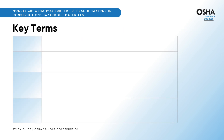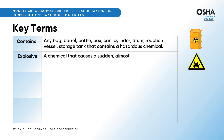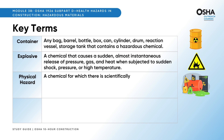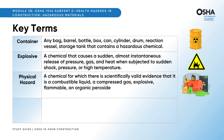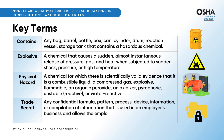Let's memorize essential key terms. Container: any bag, barrel, bottle, box, can, cylinder, drum, reaction vessel, or storage tank that contains a hazardous chemical. Explosive: a chemical that causes a sudden, almost instantaneous release of pressure, gas, and heat when subjected to sudden shock, pressure, or high temperature. Physical hazard: a chemical for which there is scientifically valid evidence that it is a combustible liquid, a compressed gas, explosive, flammable, an organic peroxide, an oxidizer, pyrophoric, unstable, reactive, or water-reactive. Trade secret: any confidential formula, pattern, process, device, information, or compilation of information that is used in an employer's business and allows the employer to obtain an advantage over competitors who do not know or use it.